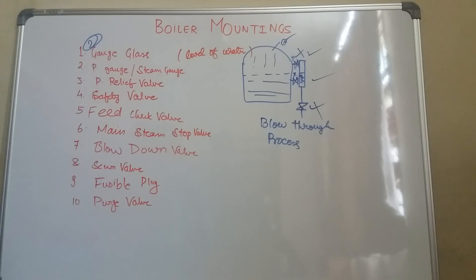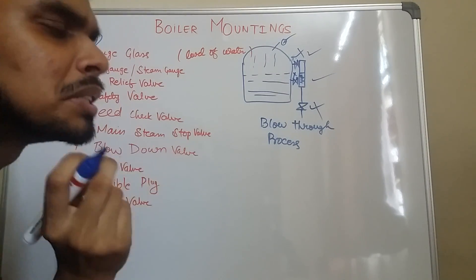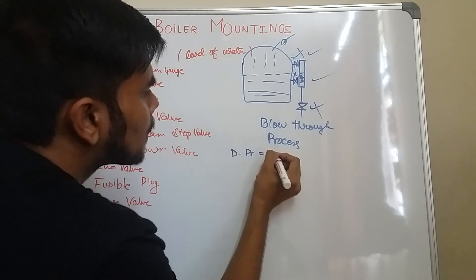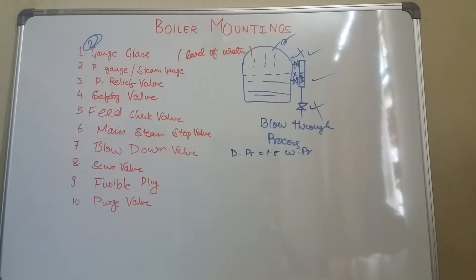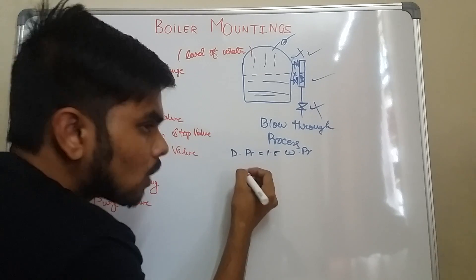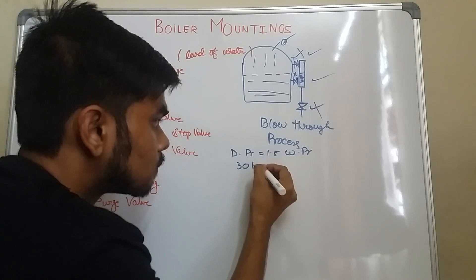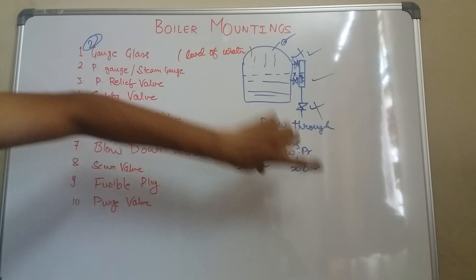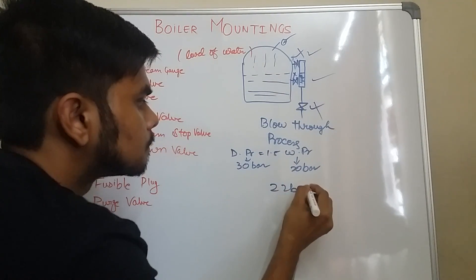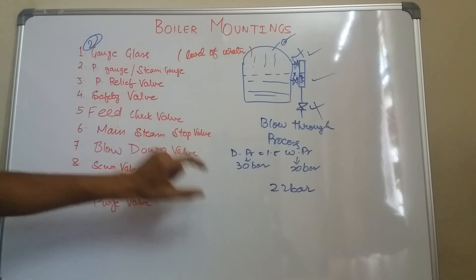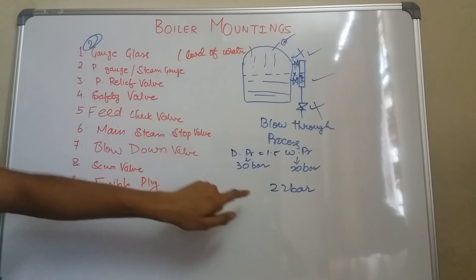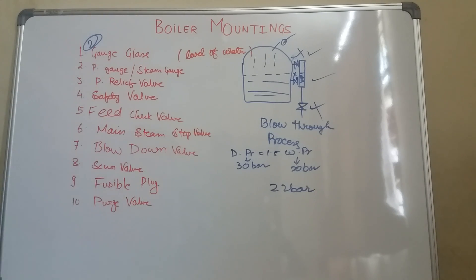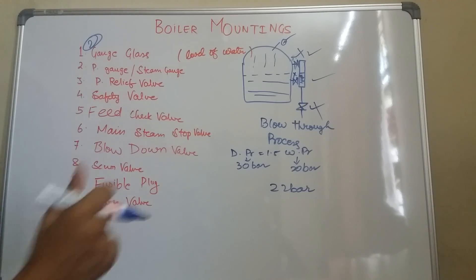Next one is your pressure relief valve. There are two kinds of pressure when you design any object: working pressure and design pressure. Design pressure should always be greater than working pressure — around 1.5 times the working pressure. Suppose my working pressure is 20 bar, then design pressure will be around 30 bar. If the pressure raises to 22 bar, the boiler operator will use the pressure relief valve to bring it back down to 20 bar.